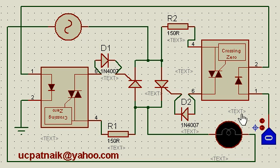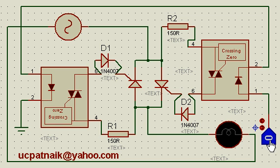For throwing light on the opto-isolators, there are LEDs at pin number one and two — this being the anode side and this the cathode side. I supply logic from here and connect both in series, so if this goes high, current flows through both LEDs. This is coming from a microcontroller or any other logic circuit. When I simulate this and make this high, you can see the lamp starts glowing.